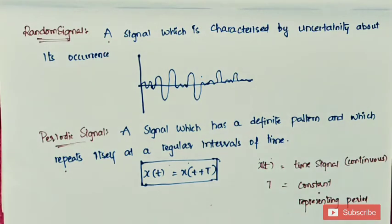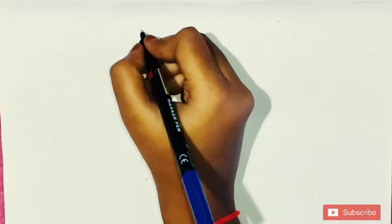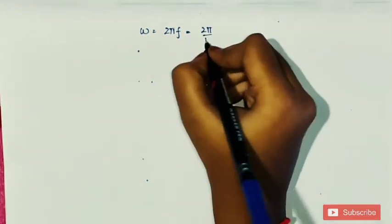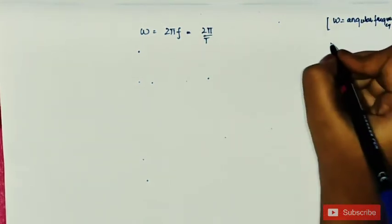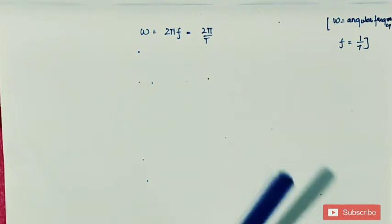The smallest value of T which satisfies the above condition is called the fundamental period. We know that x(t) = x(t + T) if it is periodic. The smallest value of T is the fundamental period. The angular frequency omega equals 2πf, and since frequency is the reciprocal of time period, omega equals 2π/T.